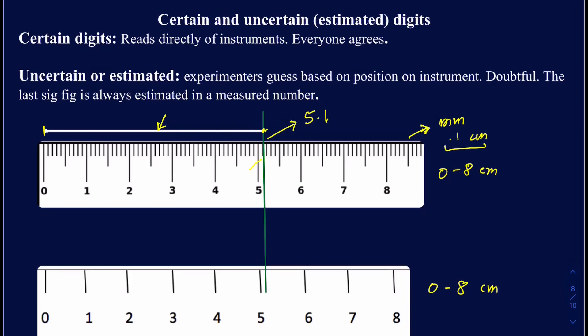You must have an estimated digit in every measurement, and that estimated digit must come from your mind. It's a little bit over 0.1, so someone might say it's 5.12 centimeters. That last digit is an estimated digit — someone may say it's 5.11 instead of 5.12, and that's completely okay. More sig figs in a given number means greater accuracy for that measured number.